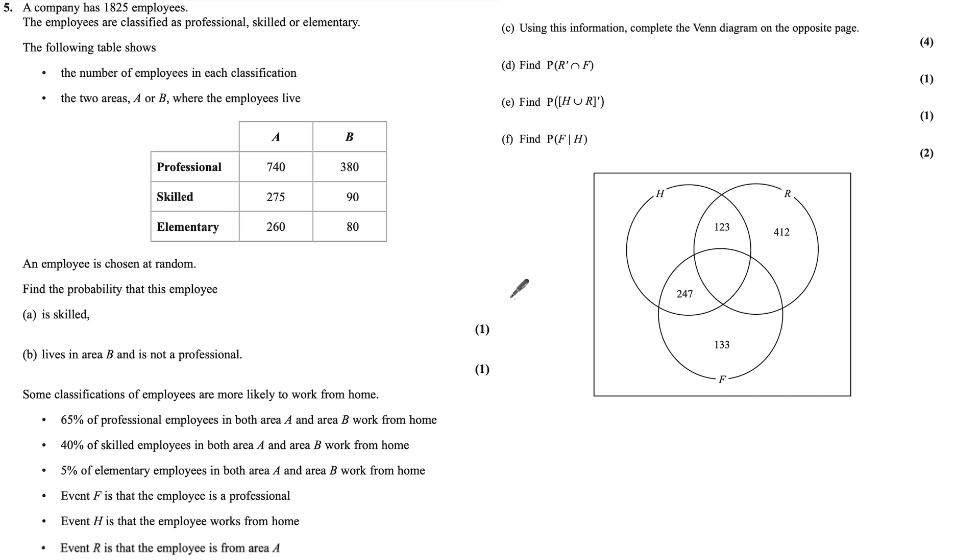So first, let's start with the center. Because we've got an employee from area A, an employee that works from home and an employee that is professional, how many people are all three of these things? Well, the professionals in area A is 740. What I don't know from this table is what percentage work from home, but I am told that 65% work from home. So 0.65 times 740 will give me the professionals in area A who work from home, which will give me my center number here, 481.